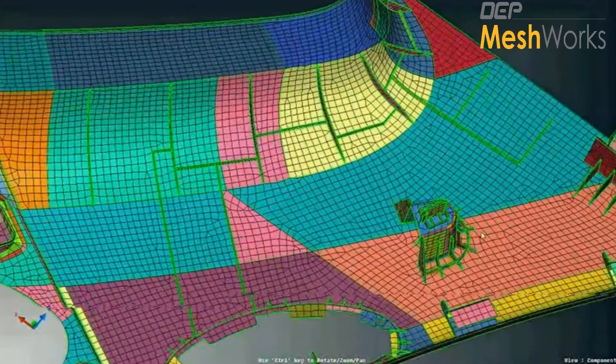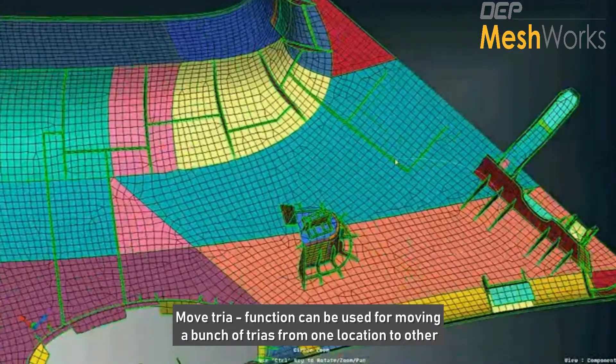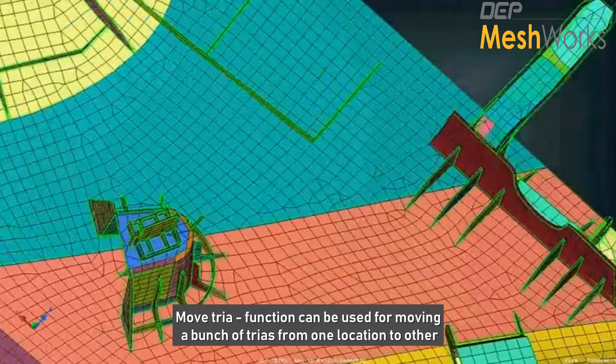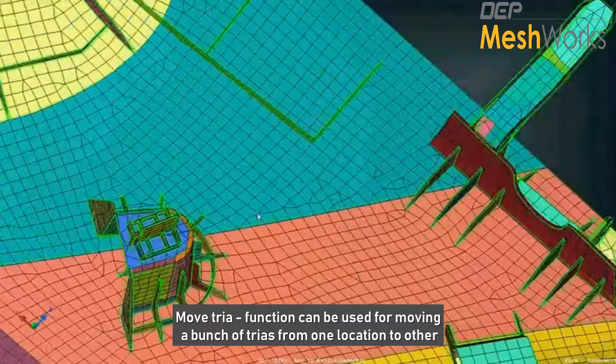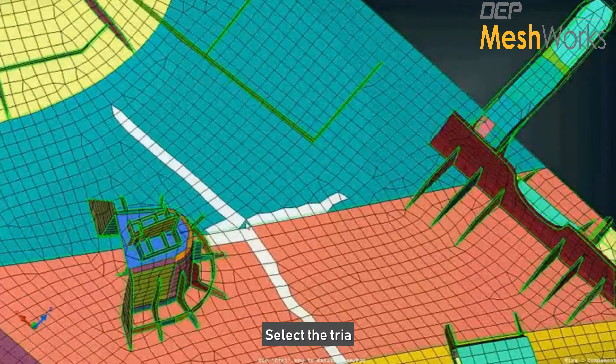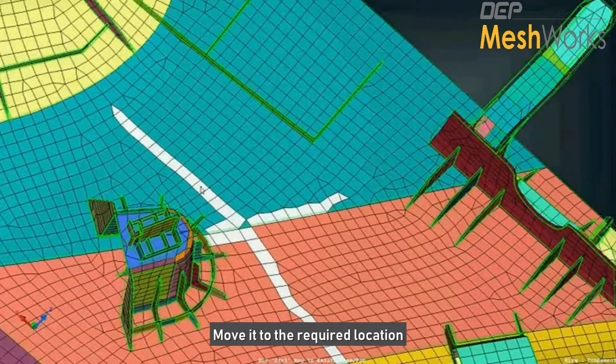So if at all we have a bunch of trias that is there in a particular location, we can use the move tria function. All the user needs to do is select the trias and then move them to a location.